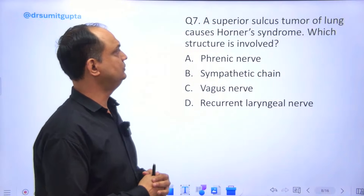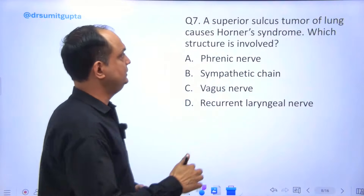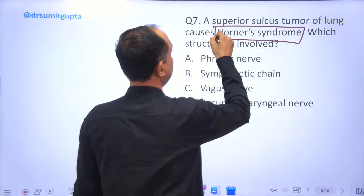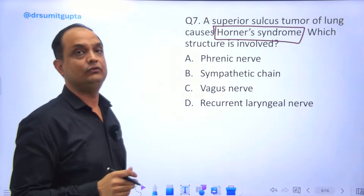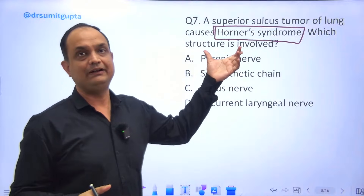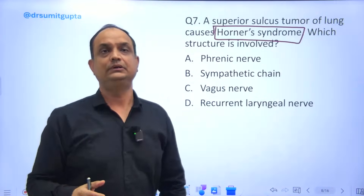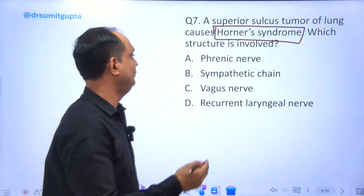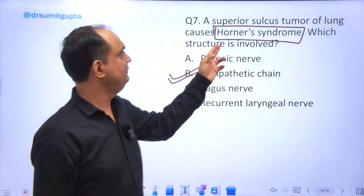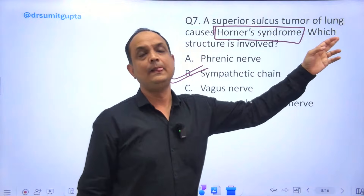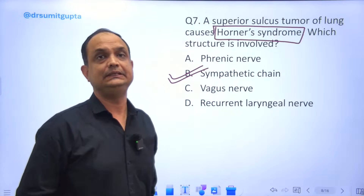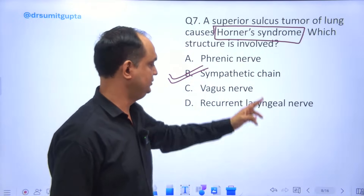The superior sulcus tumor of the lung causes Horner syndrome. Whenever we talk about Horner syndrome, it is caused by involvement of the sympathetic system. The answer is the sympathetic chain. The reason involves the lung tumor: the apical part of the lung tumor posteriorly compresses the sympathetic chain, which is in direct relation to it.